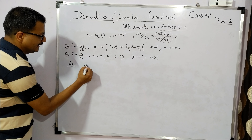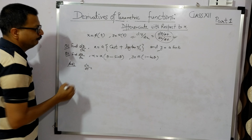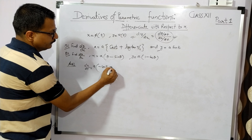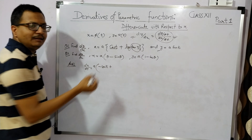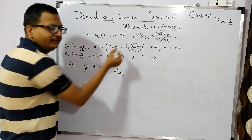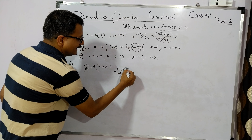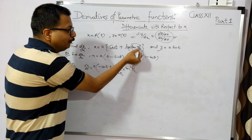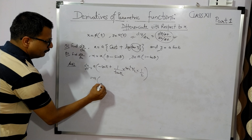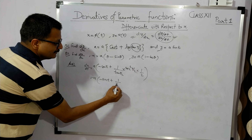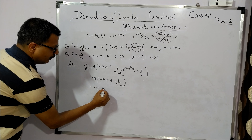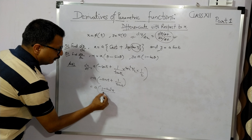पहला question: dx/dt निकालते हैं। cos का differentiate होगा minus sin, और log x का formula 1/x होता है, तो यहाँ पे वो लिख दिया। Chain rule लगाने पर sec²(t/2) आएगा, और t/2 का differentiate 1/2 आएगा। Solve करने पर: minus sin t + 1/sin t, जिसको simplify करने पर a(1 - sin²t)/sin t आएगा।